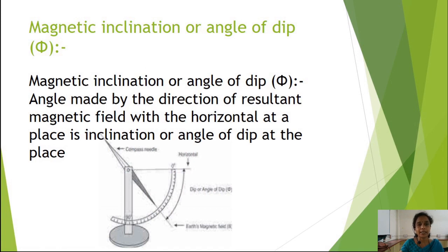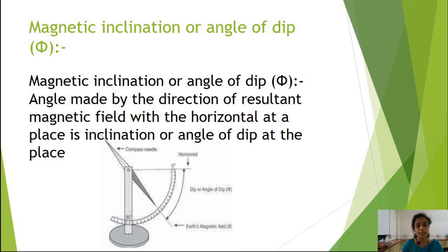The next parameter is magnetic inclination or angle of dip, denoted by the letter phi. Magnetic inclination or angle of dip is defined as the angle between the direction of the resultant magnetic field and the horizontal at a place. In the diagram, the magnetic needle, the horizontal component of earth's magnetic field, and the total earth magnetic field are shown. The angle between the horizontal component and the total earth magnetic field is the angle of dip phi.